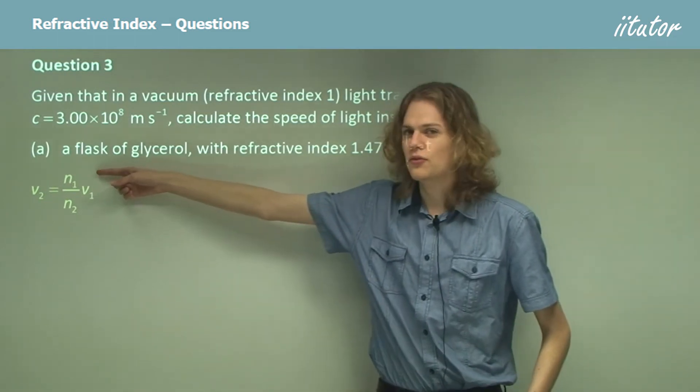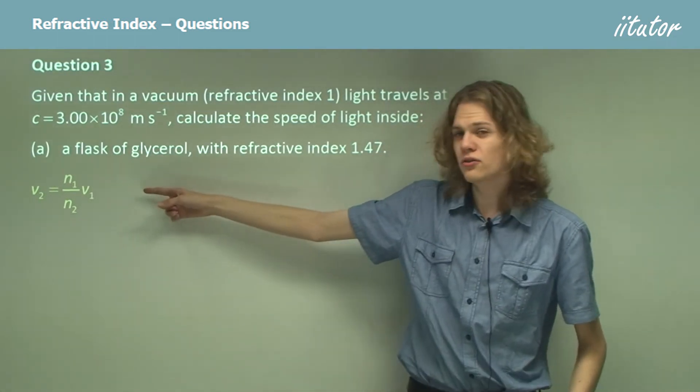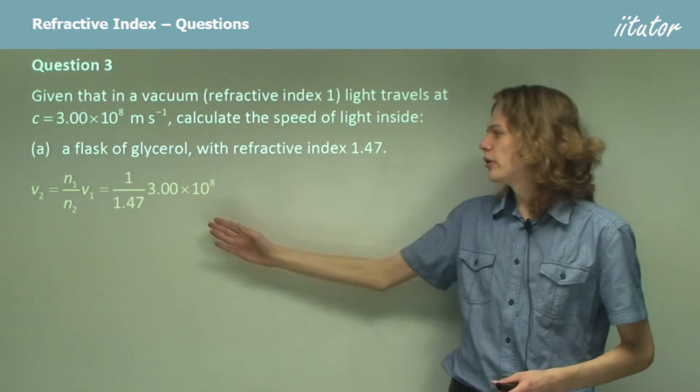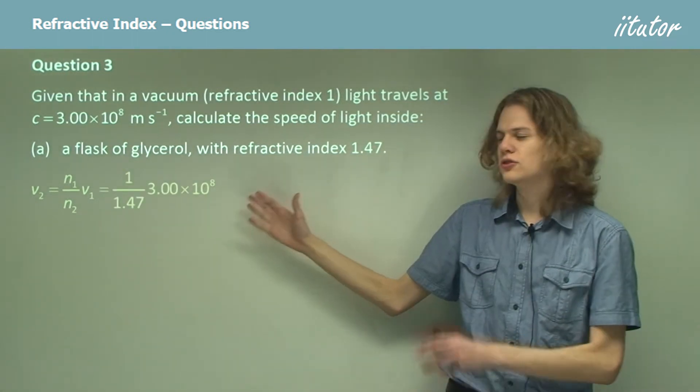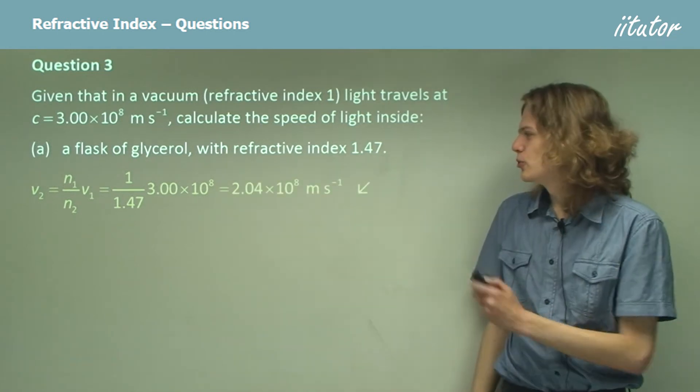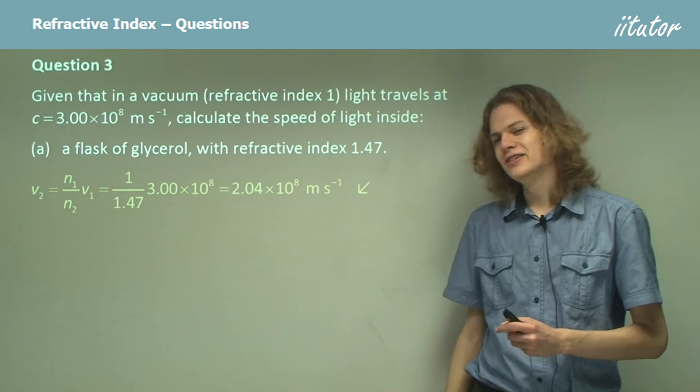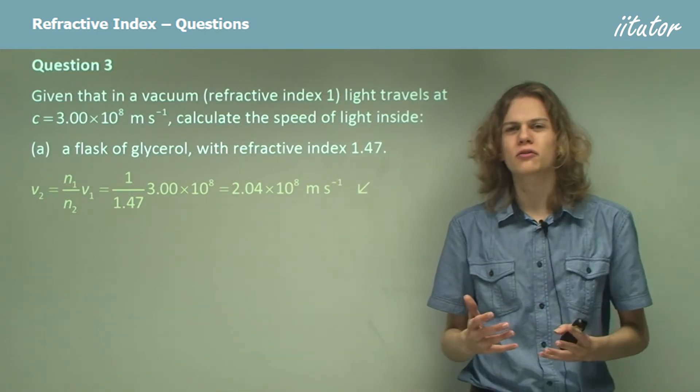And so the speed in the vacuum, C, is not changed. Substituting in our numbers, 1 over 1.47 times the speed of light in a vacuum is equal to 2.04 times 10 to the 8 meters per second. That is about two thirds of the speed of light in a vacuum.